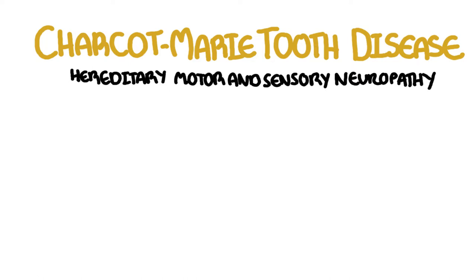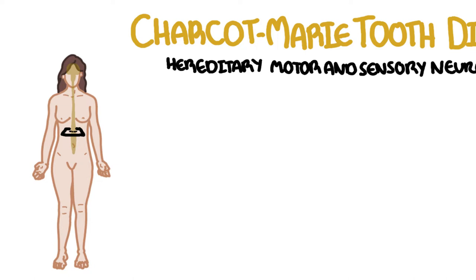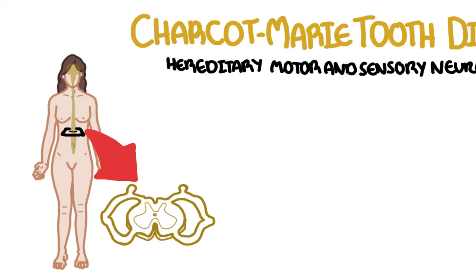It is a disease that causes injury to the peripheral nerves and affects both the motor and sensory peripheral nerves, and thus manifests as distal limb weakness and sensory loss. The peripheral nerves are the nerves that bring information in and out of the central nervous system, which is your spinal cord and your brain.